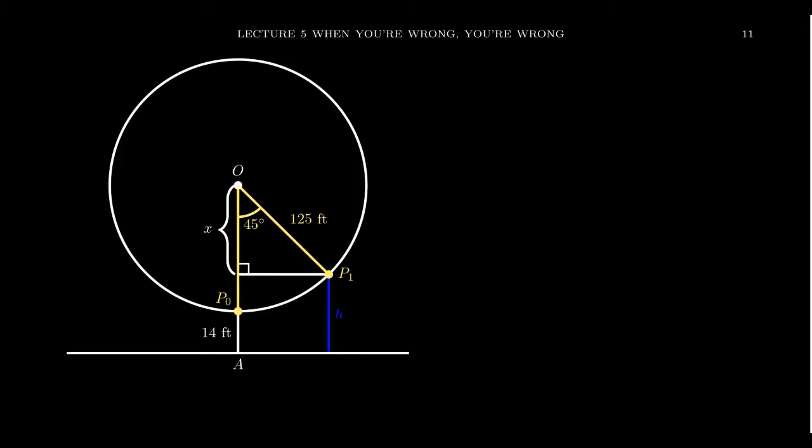What we want to do is actually consider the horizontal line. Why are we doing the horizontal line? Because it's parallel to the ground. So take the horizontal line that goes through P1, and it'll intersect the original radius at this right angle right here.